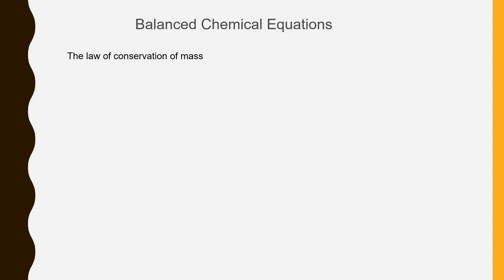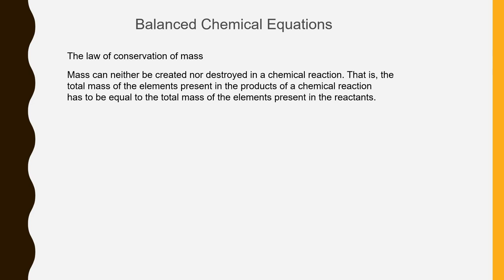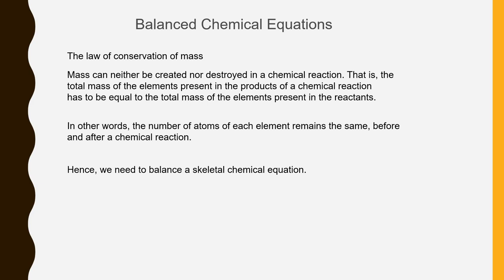Have you remembered the law of conservation of mass which we have studied in class 9. The law of conservation of mass states that mass can neither be created nor destroyed in a chemical reaction. This means that total mass of the elements which are present in the products are always equal to the total mass of the elements present in the reactants. In other words the number of atoms of each element should remain same before and after a chemical reaction. So we need to balance a skeletal chemical equation to abide the law of conservation of mass.